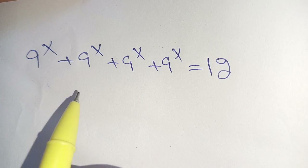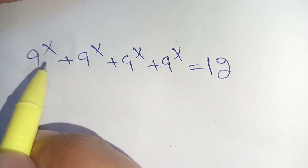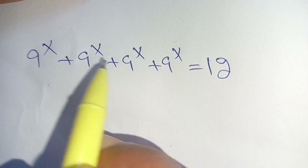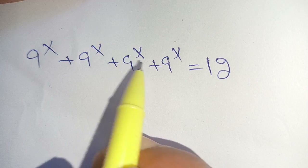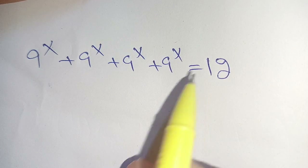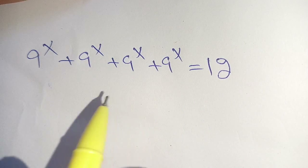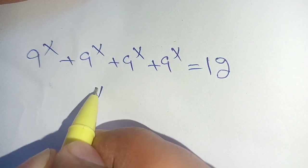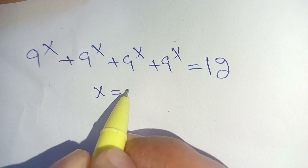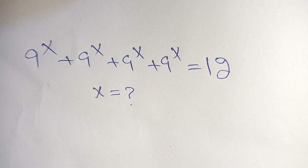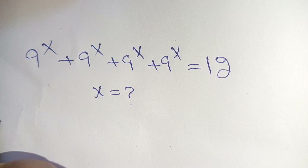Hello everyone. How to solve this equation: 9 raised to the power x, plus 9 raised to the power x, plus 9 raised to the power x, plus 9 raised to the power x is equal to 12, and we have to find the value of x which satisfies this equation. Let us solve this.